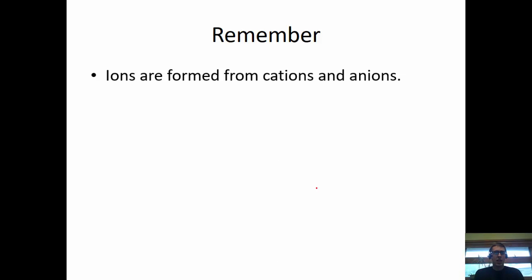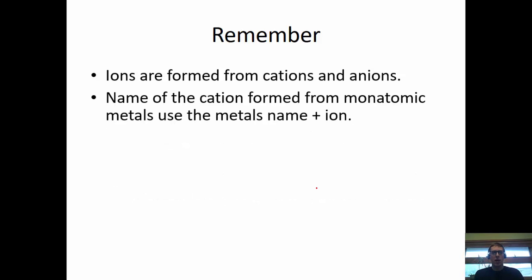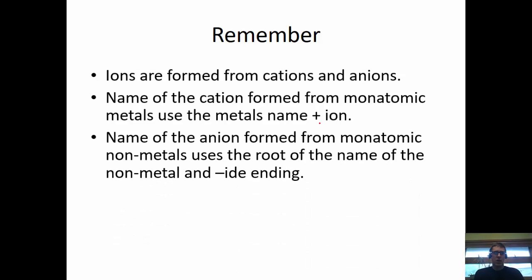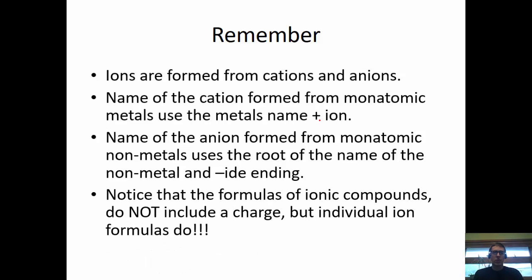Ionic compounds are formed from cations and anions. The name of the cation from a monatomic metal uses the metal's name — that's the positive ion. The name of the anion from a monatomic nonmetal uses the root of the nonmetal's name plus the '-ide' ending: chloride, phosphide, oxide. Notice that formulas for ionic compounds do not include a charge — they balance out. But individual ion formulas do: Ca²⁺, Mg²⁺, Al³⁺. AlCl₃ has no plus or minus because they balance.